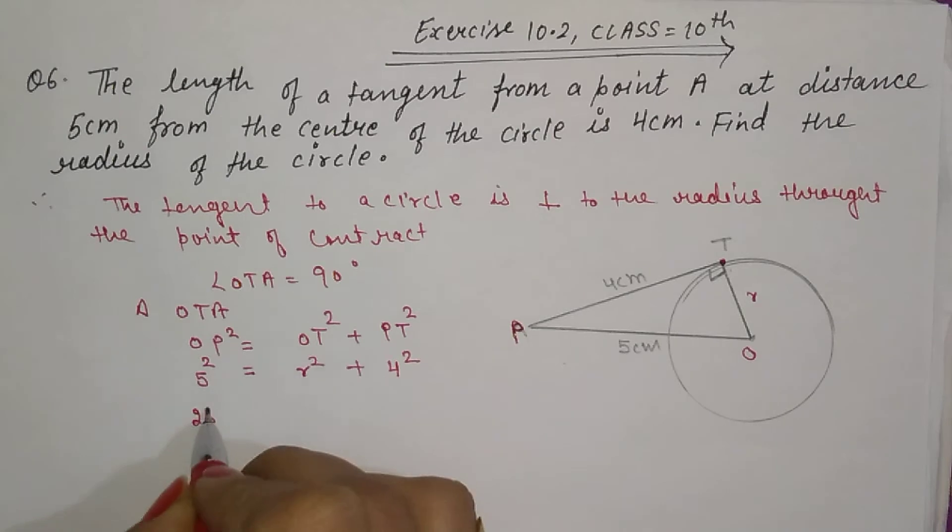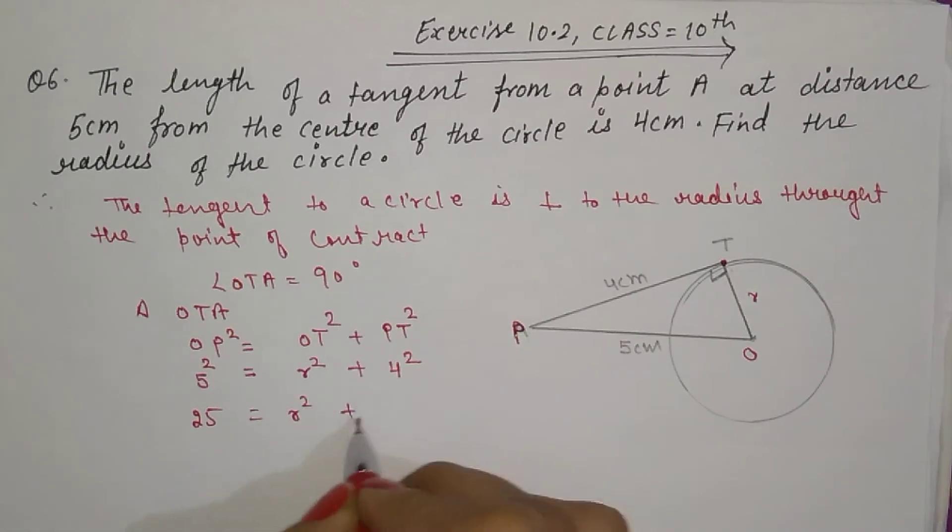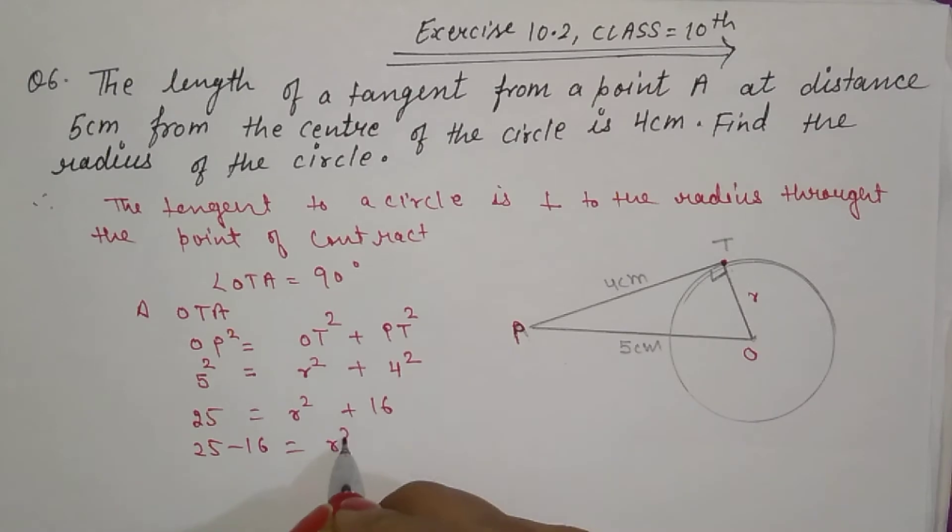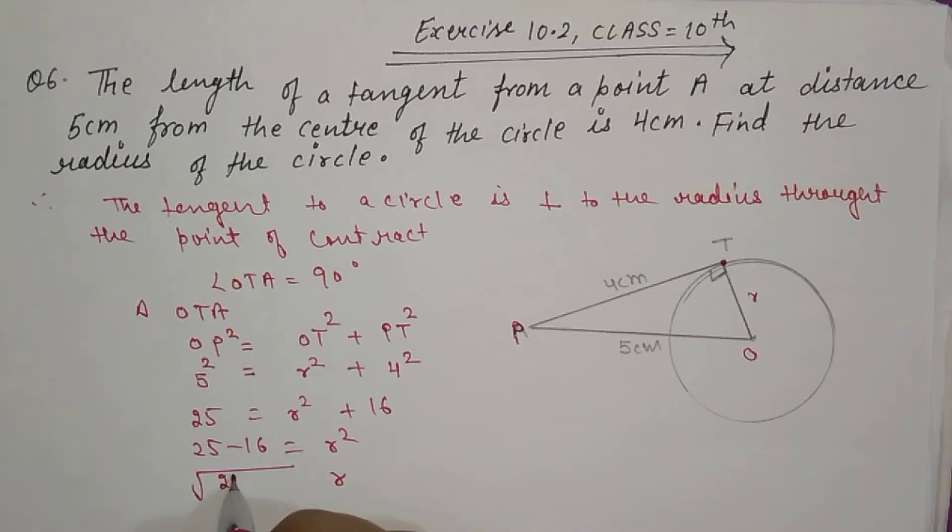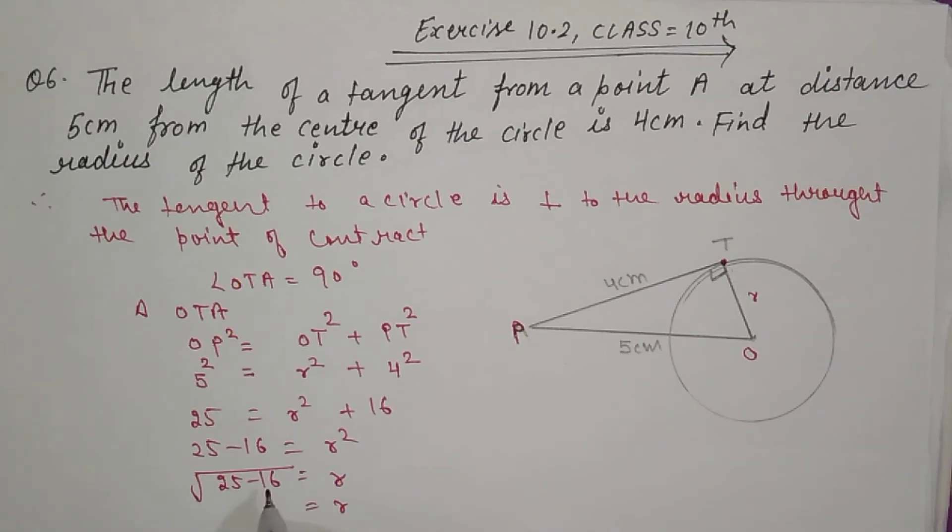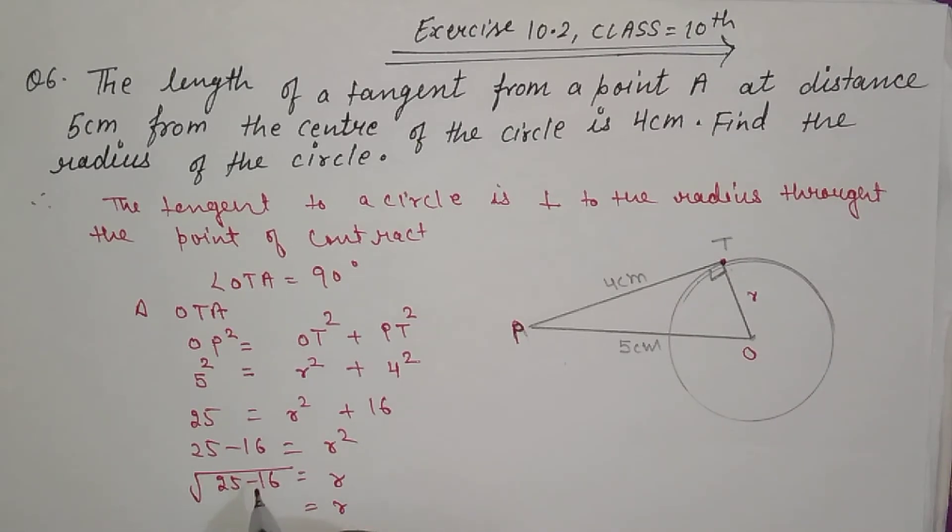So 25 equals R square plus 16. That is 25 minus 16 equals R square. R equals root of 25 minus 16. So 25 minus 16, that is 9. So root of 9 is 3.